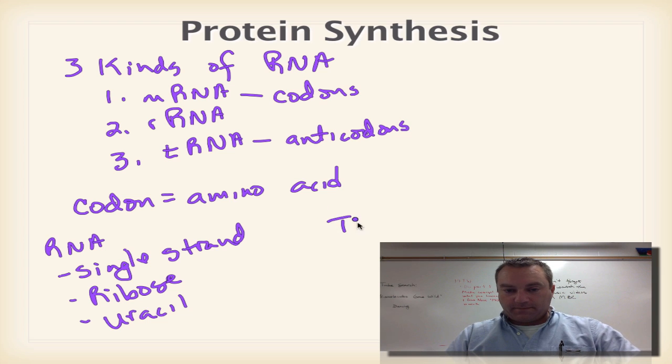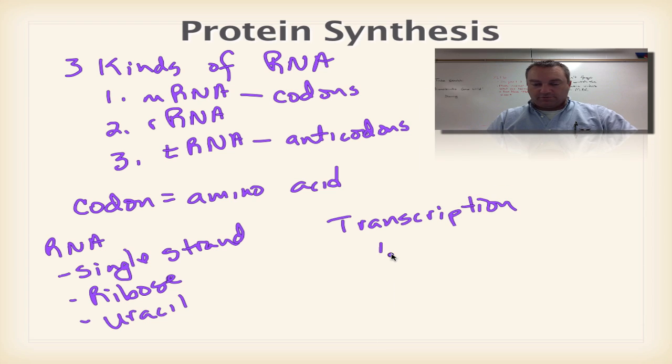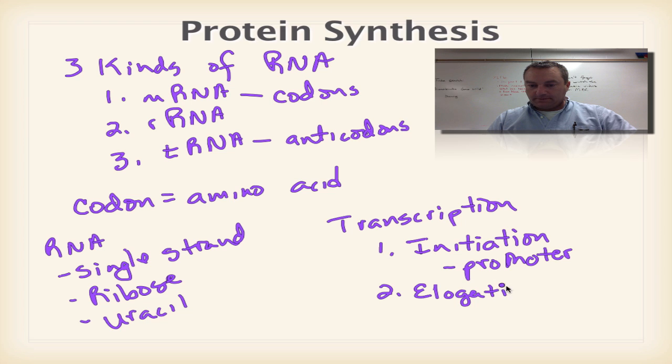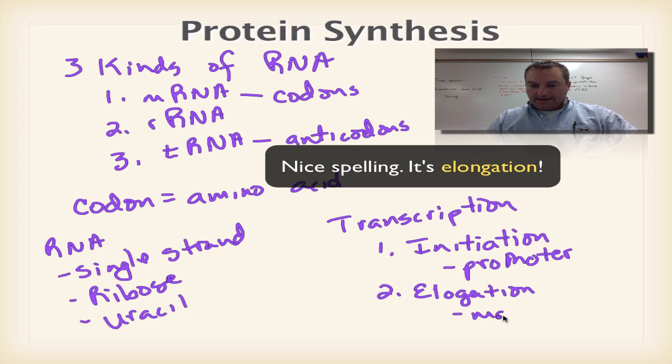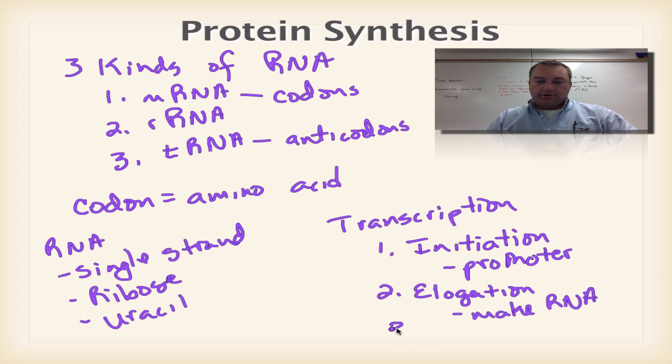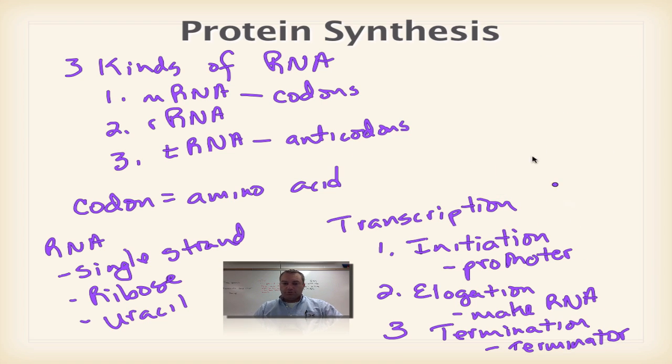On the previous screencast, we went over transcription, and the information we want to remember is it has three parts. Initiation is when RNA polymerase will bind to the promoter. Then step two, we have elongation in which you actually are making the RNA. And then we're going to have termination when the RNA polymerase comes along a base sequence that's called the terminator.